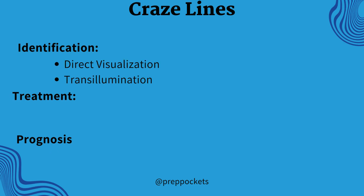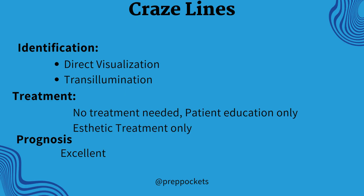These lines are identified through direct visualization and transillumination. Transillumination is a diagnostic technique that utilizes light to illuminate teeth and surrounding tissues, revealing details not easily seen with the naked eye or traditional x-rays. Healthy tooth structure allows light to pass through easily, while areas of decay or cracks may appear as shadows or dark areas. Treatment is only required when a patient has an aesthetic concern, which includes veneers and other aesthetic approaches.